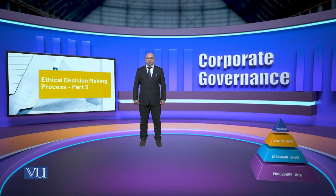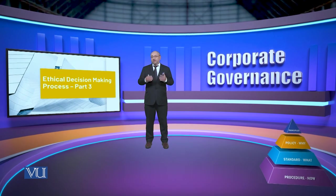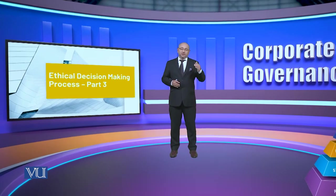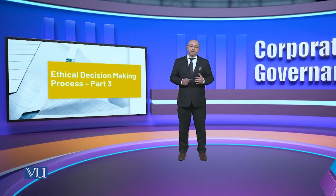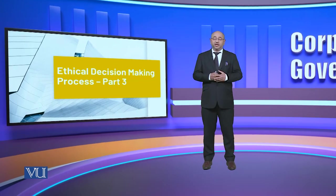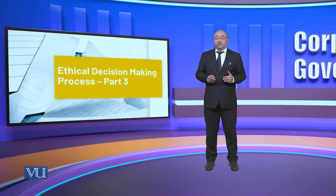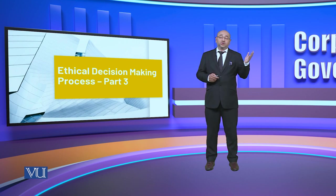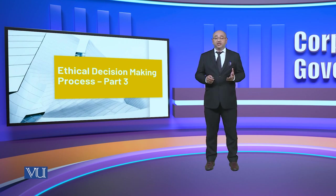Bismillahirrahmanirrahim, Assalamu Alaikum from Pakistan. We are continuing with the ethical decision-making process and we are now on Part 3. We have basically looked at the 5 different elements which tend to facilitate the process of decision making, especially in the ethical context, and we go a little bit ahead so that the complete exercise is unfolded in front of you, and then later on, whenever you go back to your institutions or organizations, you can always be practicing this in a better way.